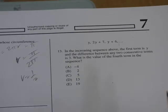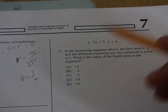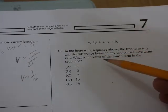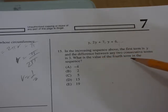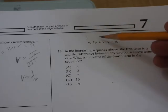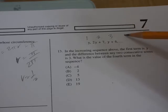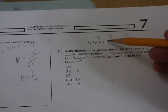Here's another problem. Now this one is pretty slick. This is basically an arithmetic sequence. It says, in the increasing sequence above, the first term is y, and the difference between any two consecutive terms is 3. What is the value of the fourth term in the sequence? And they give you a bunch of variables. So y is the first term, 2y + 7 is the second term, and 3y + 6 is the third term. So we're supposed to figure out the fourth term using this and the fact that the difference between these are 3.